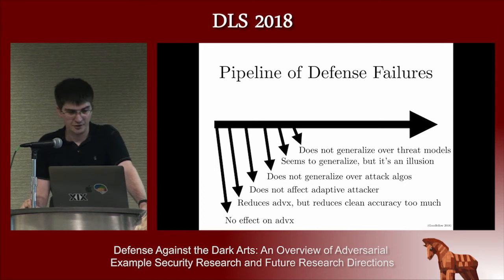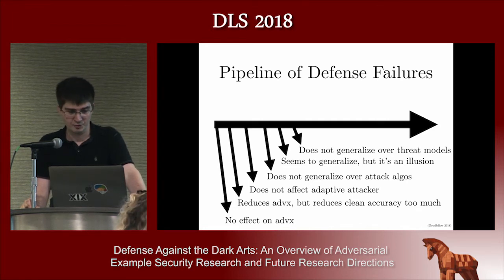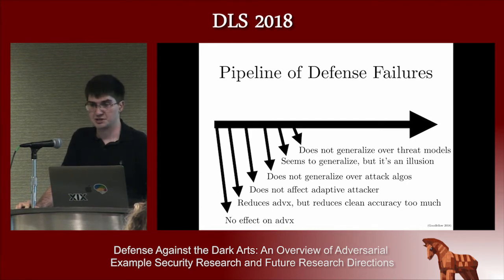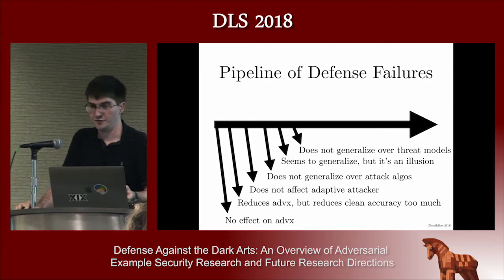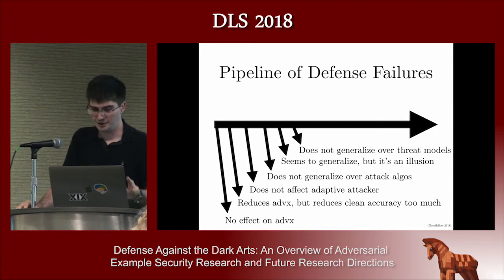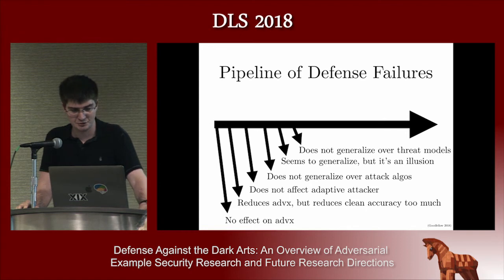The worst thing that can happen is the defense just doesn't do anything about adversarial examples — a lot of ideas fall apart there. Next, you can actually succeed at reducing error on adversarial examples but hurt clean accuracy so much that the trade-off is not worth it. If you successfully get through both stages, the next problem is that the defense may not deal with an adaptive attacker — you can bring down error on adversarial examples you had sitting on disk, but if the adversary makes new ones based on your new model, you can't do anything about those.